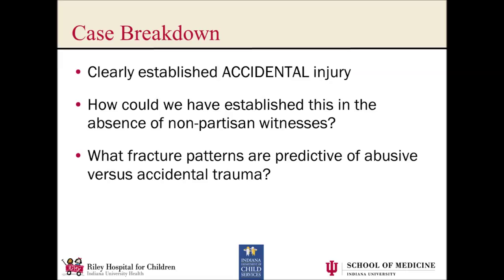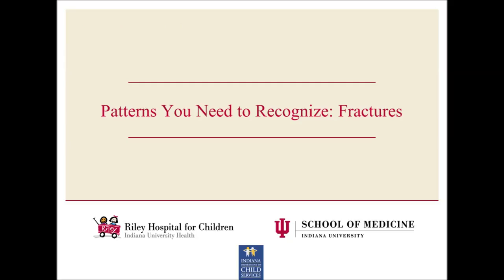So the questions we have to answer are: one, how could we have established that this was accidental even in the absence of non-partisan witnesses? And two, what fracture patterns are predictive of abuse versus accidental trauma?